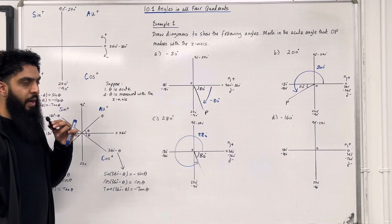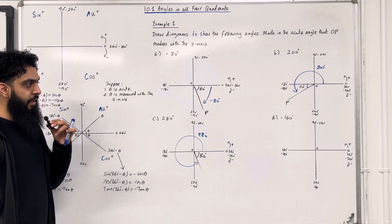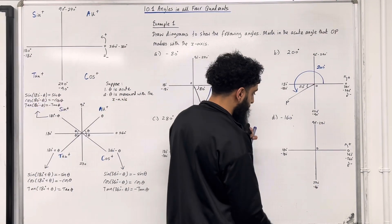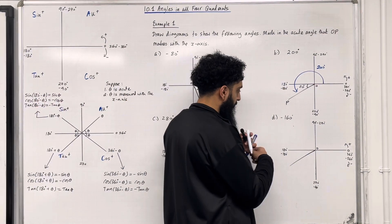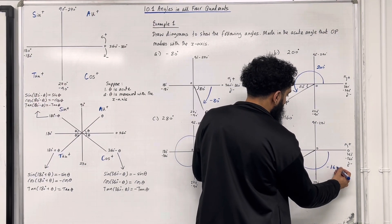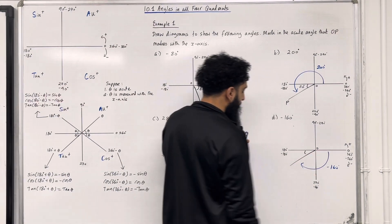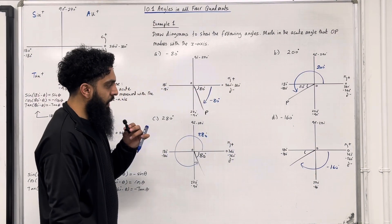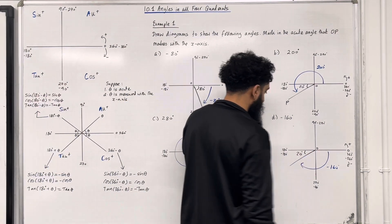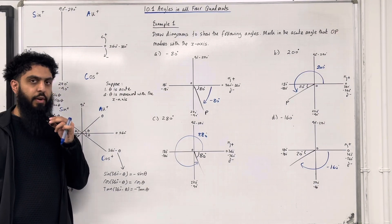Part D: minus 160 degrees — we go clockwise from the positive x-axis. Minus 160 degrees looks something like this. The acute angle created with the x-axis is 20 degrees. That completes example 1, labelling angles on a CAST diagram.